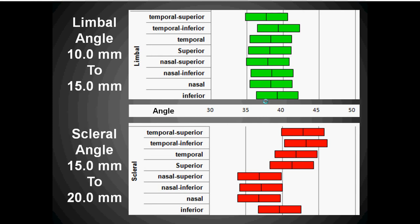That can be seen in these bar graphs, where the 10 to 15mm cord shows a fairly tight distribution of angles around the clock. However, at the 15 to 20mm cord, the eye begins to show a greater degree of asymmetry.